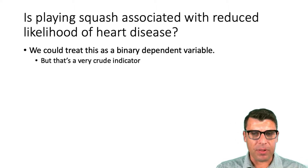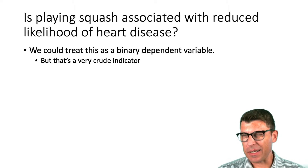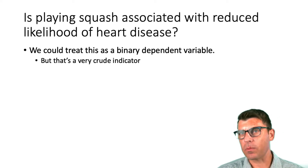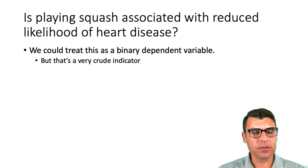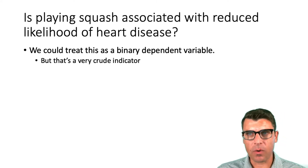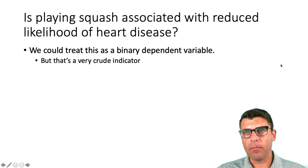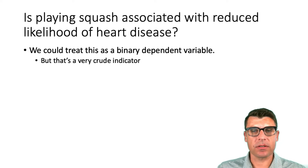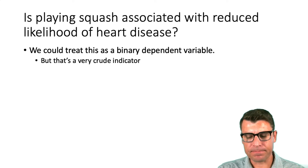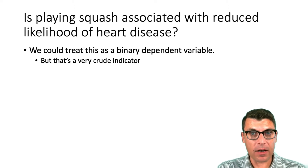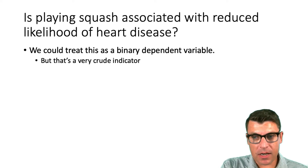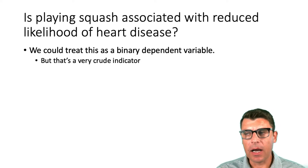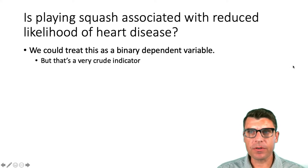We can make some predictions about the effect of squash on heart disease, but that's a crude indicator. Simply playing squash is probably not exactly what we're interested in here. What we're really interested in is: does the amount of time you spend playing squash associate with reduced heart disease? That's an indirect way of saying we're interested in the relationship between a continuous independent variable and some outcome measure. The tools we've used up to this point — t-tests and ANOVAs — are useful for categorical independent variables but won't do us much good here.